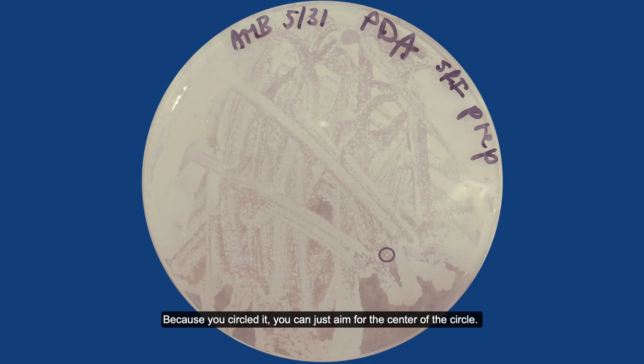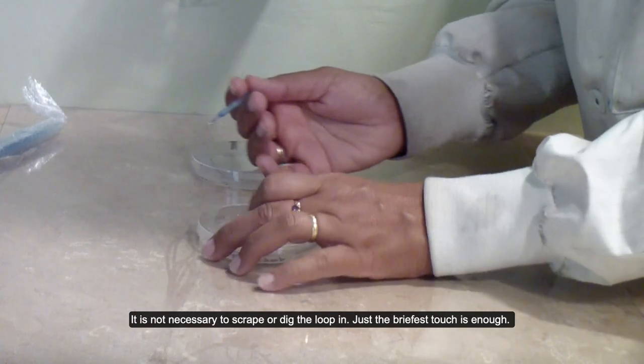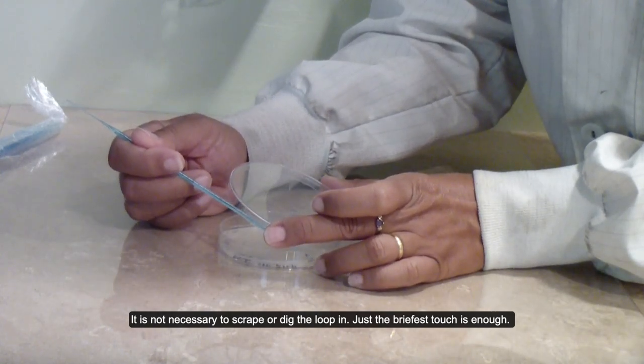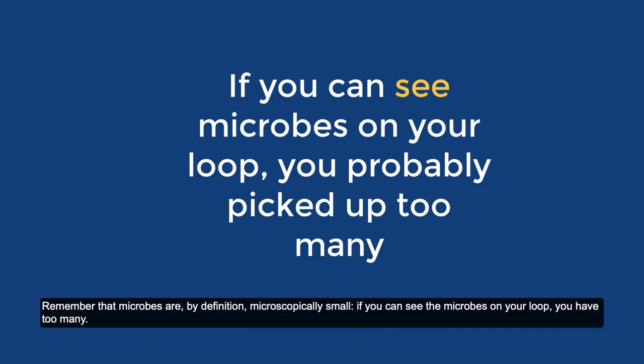Because you circled it, you can just aim for the center of the circle. It is not necessary to scrape or dig the loop in. Just the briefest touch is enough. Remember that microbes are, by definition, microscopically small. If you can see the microbes on your loop, you have too many.